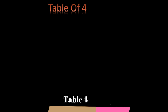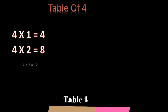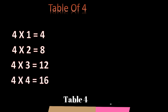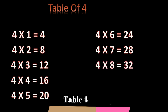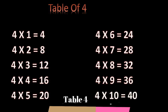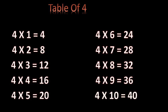Table of 4. 4 ones are 4. 4 twos are 8. 4 threes are 12. 4 fours are 16. 4 fives are 20. 4 sixes are 24. 4 sevens are 28. 4 eights are 32. 4 nines are 36. 4 tens are 40. So next table.